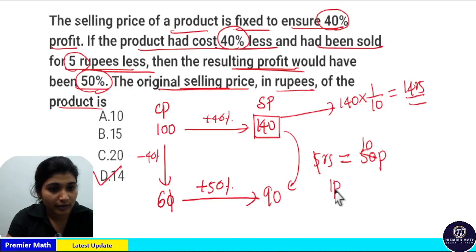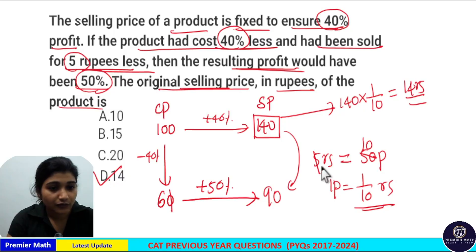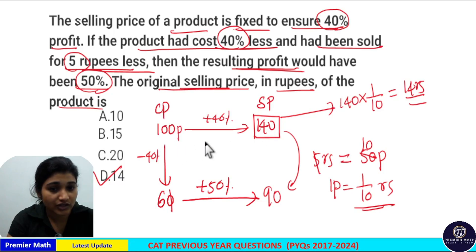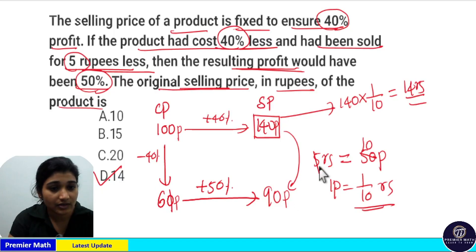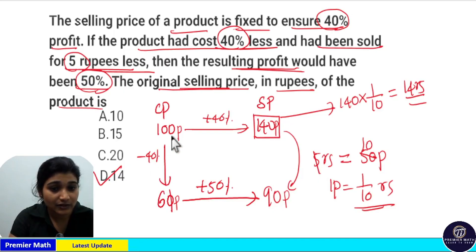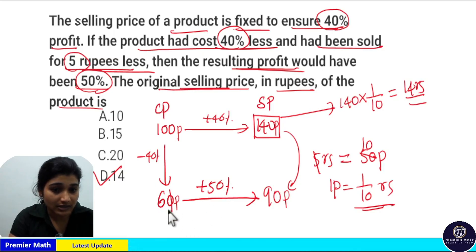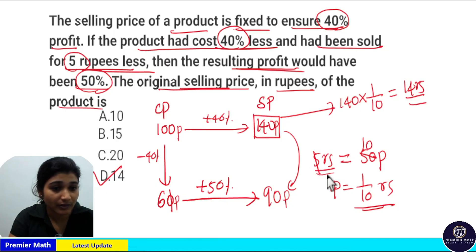Note that we cannot subtract 5 rupees directly from the 140 parts, because we took cost price as 100 parts and selling price as 140 parts. The new cost price is 60 parts and new selling price is 90 parts. We can take 40% less from the 100 part to get 60 part, and 50% profit from 60 part to get 90 part — that is correct because all these are in percentage. We cannot subtract 5 rupees from the 140 part; always work in percentage format.